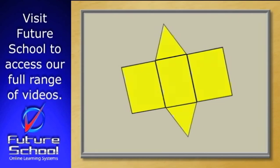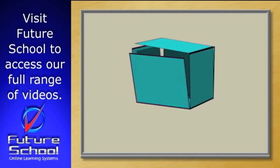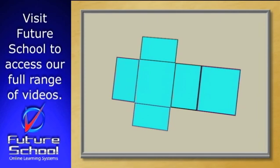This is a triangular prism. If all the sides are rectangular, then it's called a rectangular prism. Most boxes are rectangular prisms.